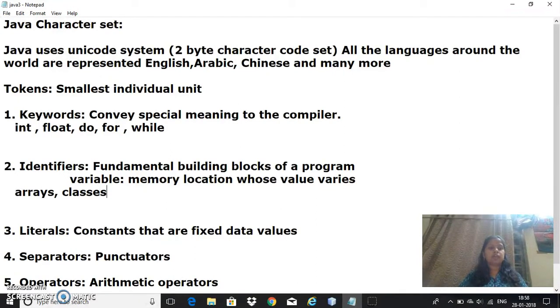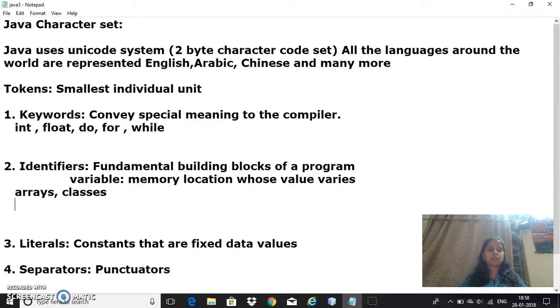All these are different identifiers. We have certain rules for identifiers: identifiers should not start with a number, should not have spaces in between, and should not have special characters. For example, if I want to create a variable for adding two numbers, I can name it firstNum, num1, n1, a, b, c - all these are different variables. These variables should be declared with the help of a data type, which we'll discuss later.